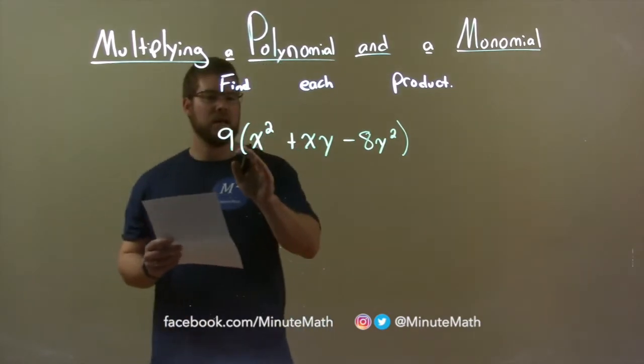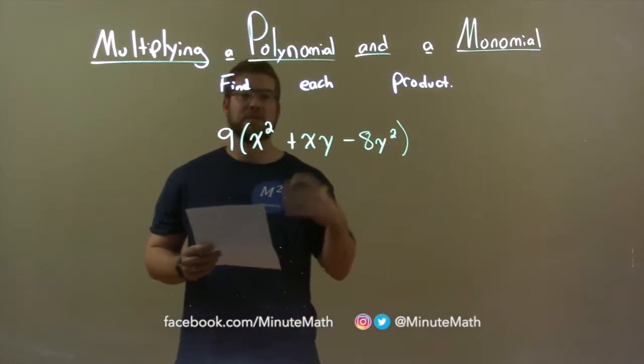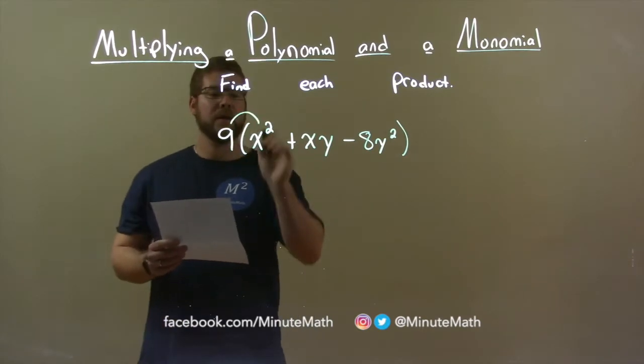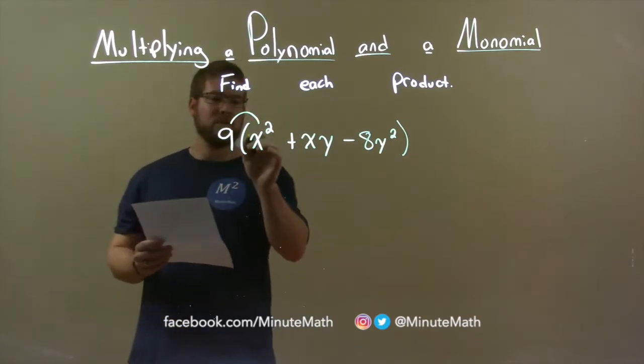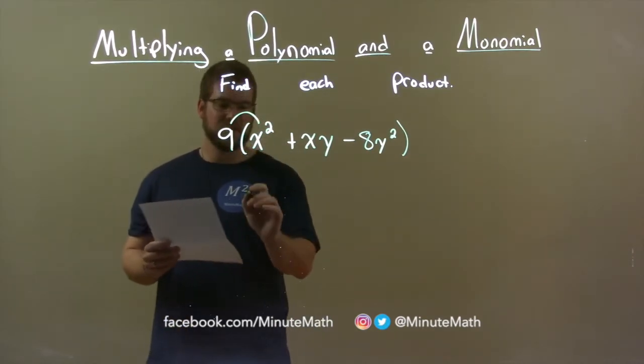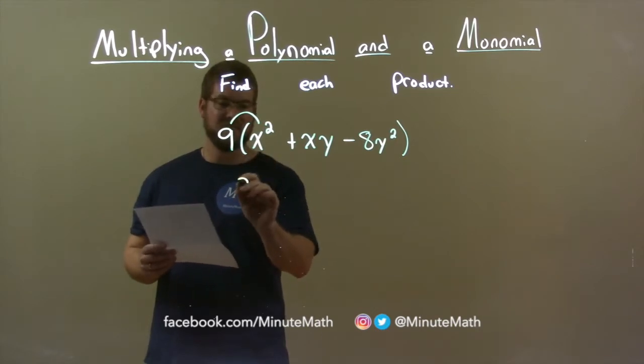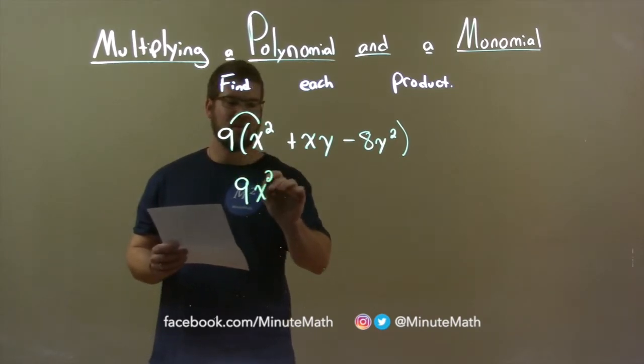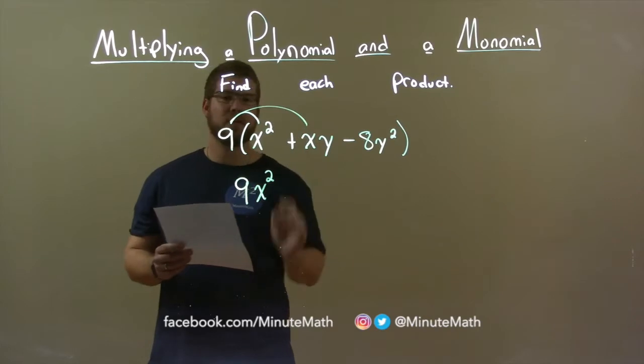First thing, I take the 9 and I'm going to multiply it to all three terms in the parentheses. So, 9 times x squared. Well, there's the coefficient of 1 out front, so that just becomes 9 times 1 is 9, and the x squared comes down. Same thing happens with the next term.